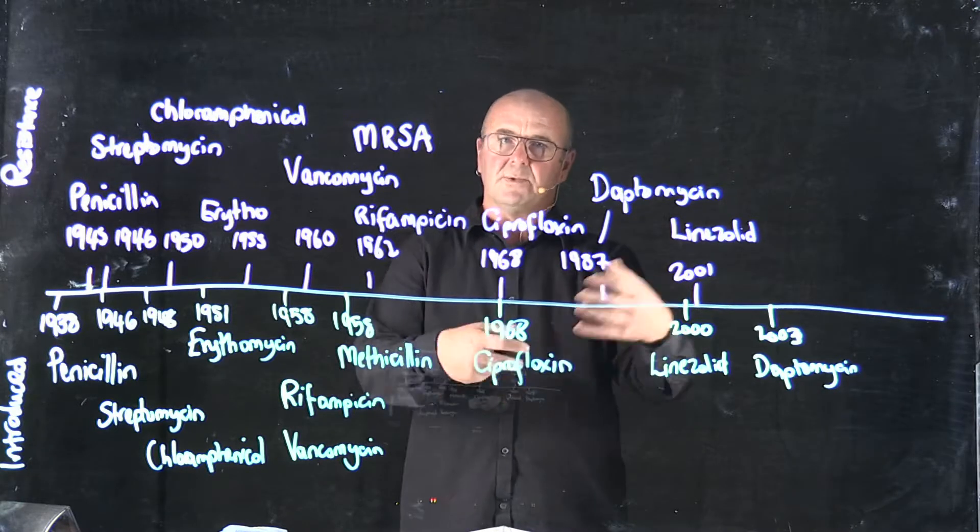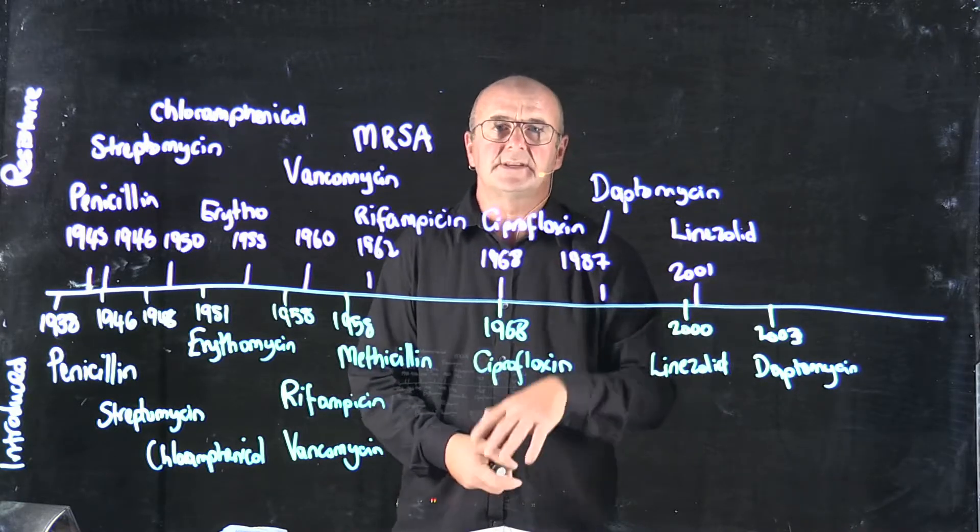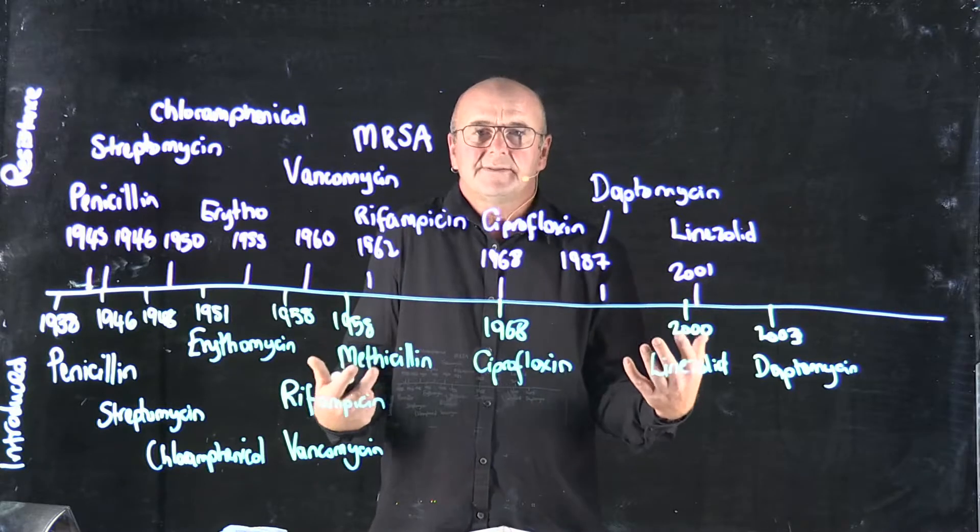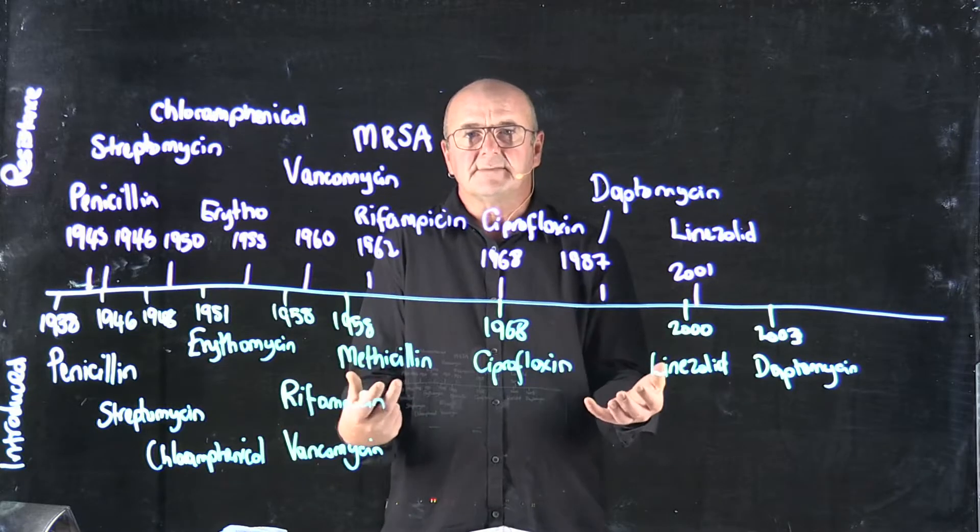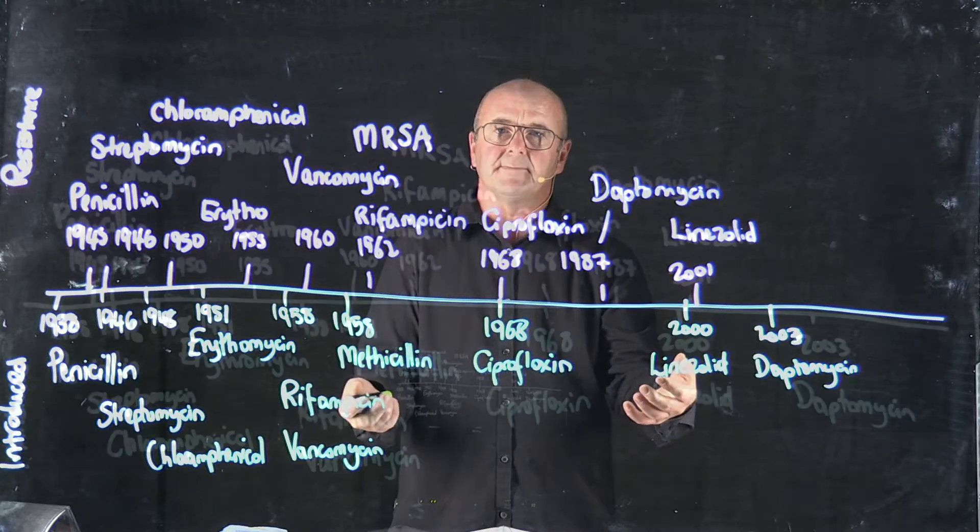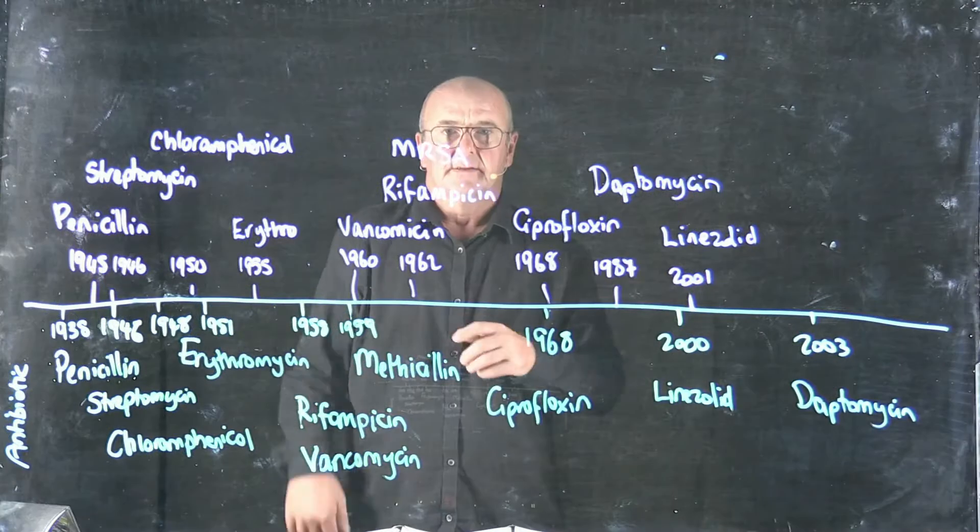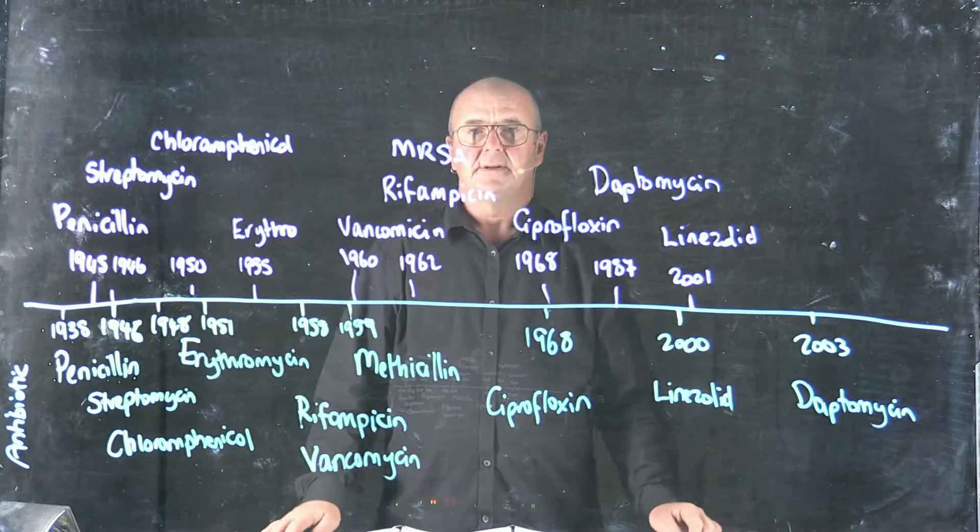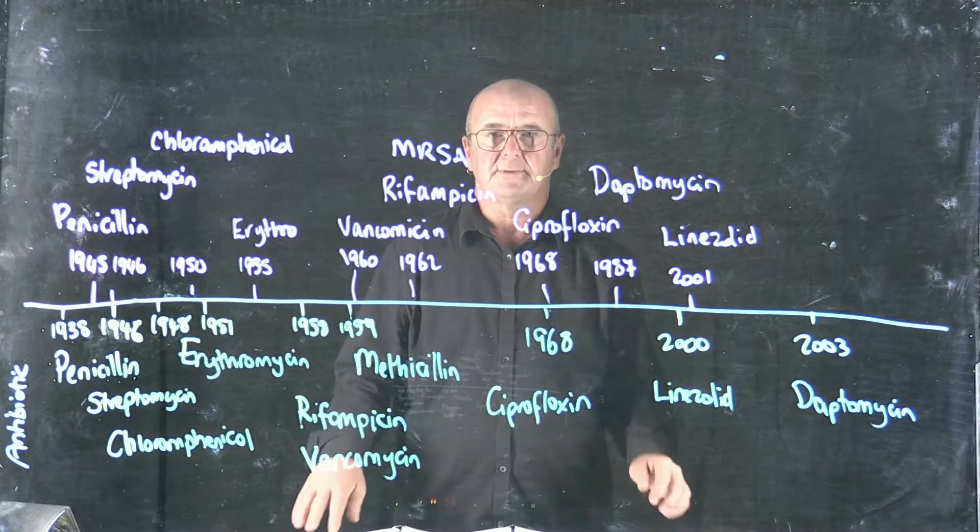So there's a very strong selective pressure for bacteria to develop resistance to antibiotics. And this has been happening for a really long time. We're just at one end of it, tapping in, using these antibiotics. But the bacteria don't care. They've got resistance mechanisms. And they can share their resistance mechanisms very easily. So this is a real problem. Antibiotic resistance is a real problem.